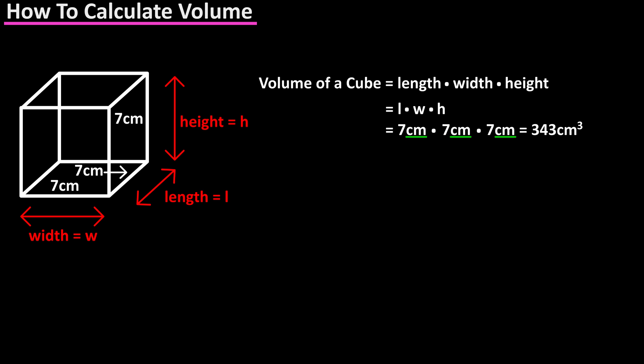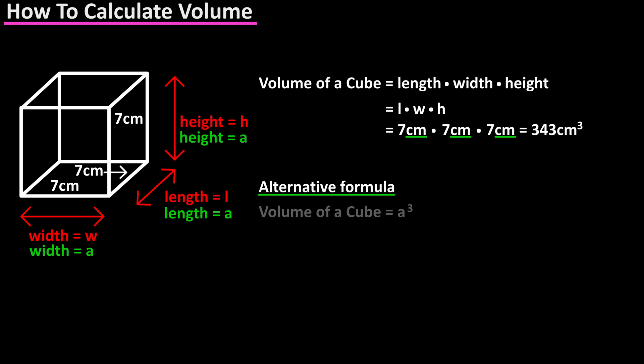As you can see, because this shape is a cube all of the measurements are the same, so an alternative way to write the formula would be A cubed, and 7 centimeters cubed, or 7 raised to the 3, is 343 centimeters cubed.